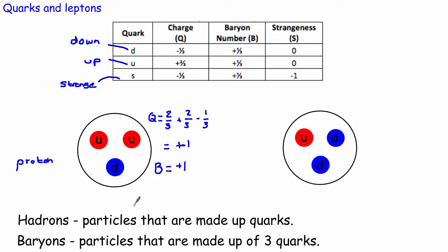There are a couple of definitions we need. Particles that are made of quarks are called hadrons. Now we can combine quarks in a few different ways, so hadrons is just a generic name for particles made of quarks. A classification of hadrons is a baryon — baryons are particles made of three quarks. The proton is a baryon because it's made of three quarks and has a charge of plus one.